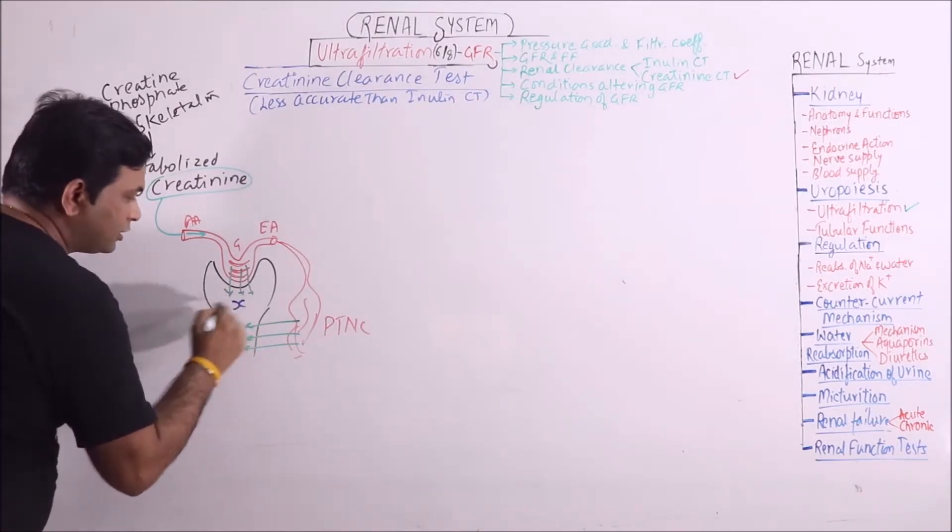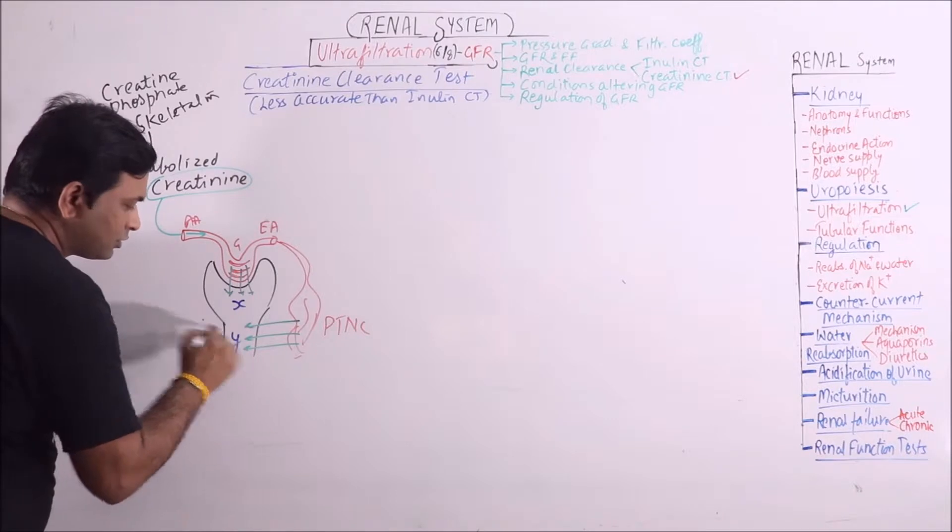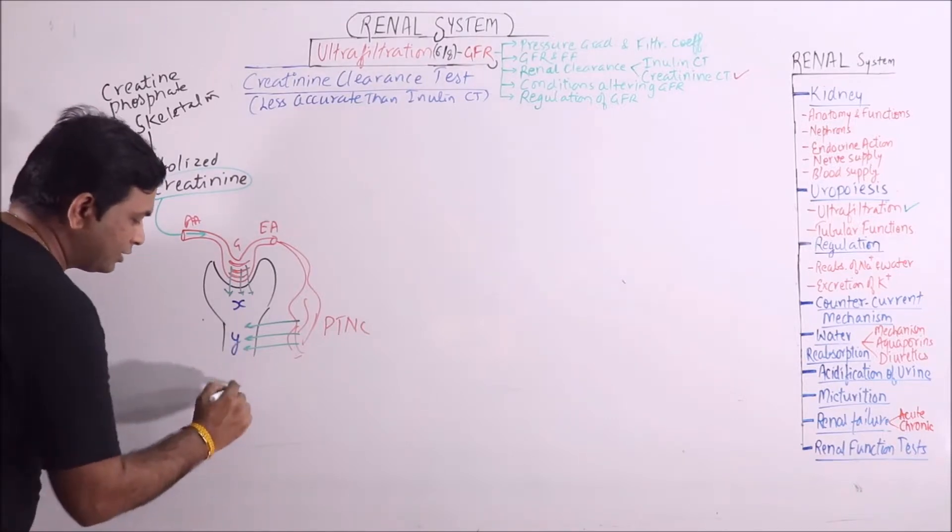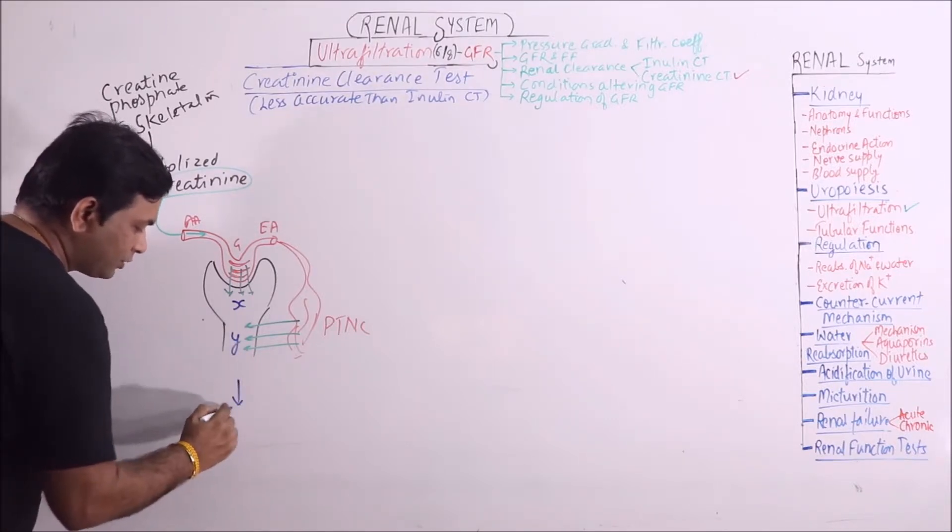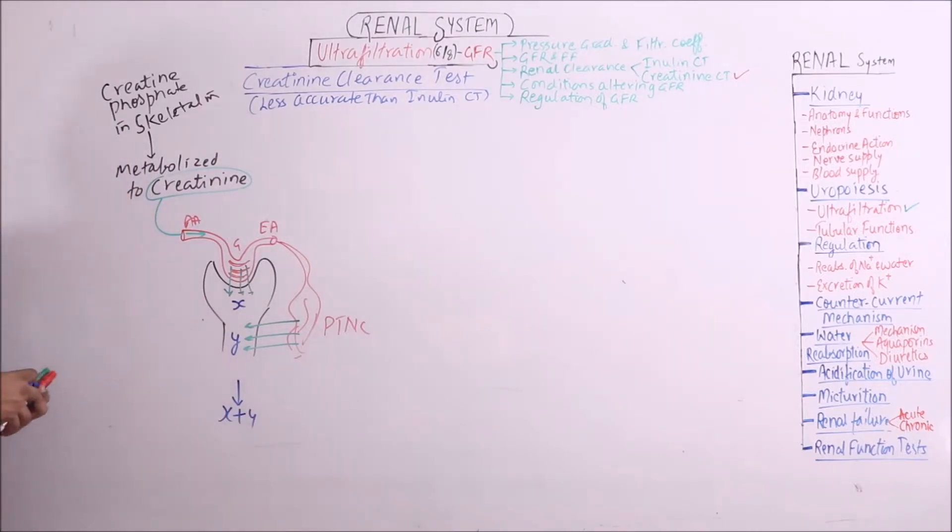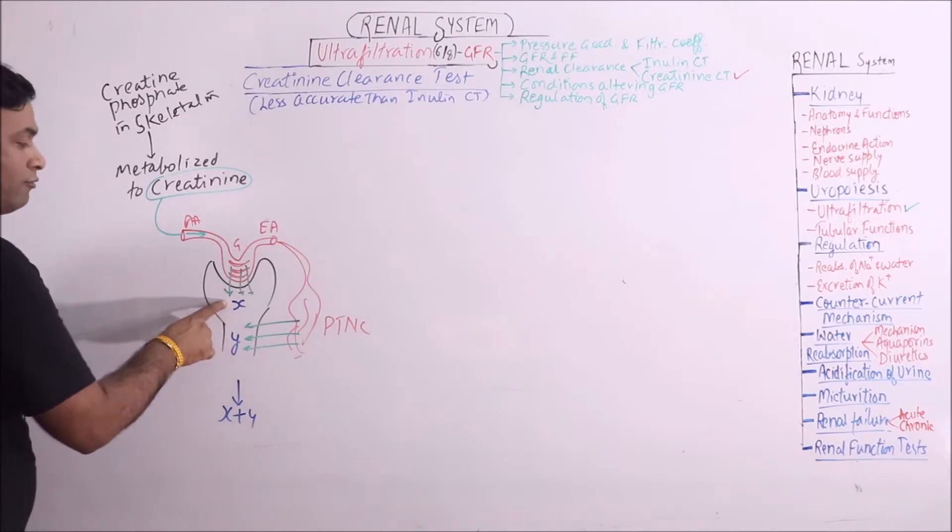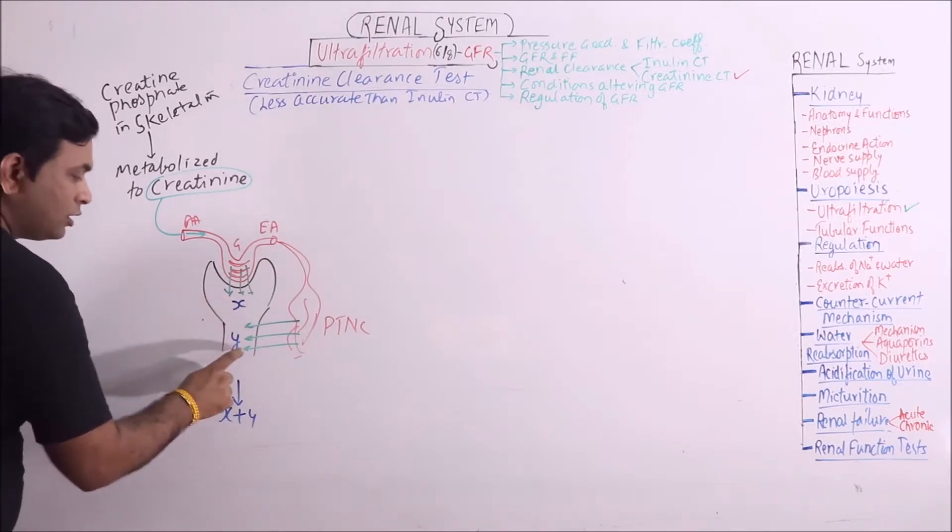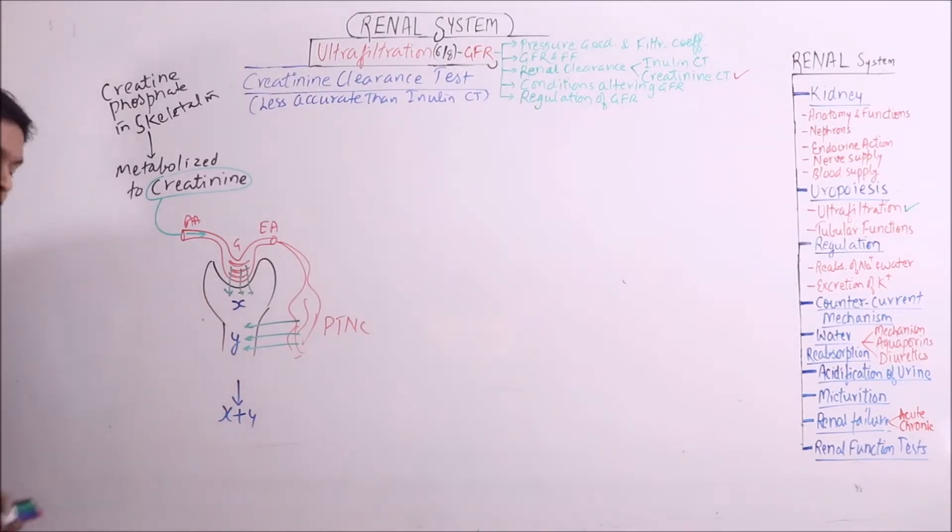Now if this filtered value is x, this secreted value is y, then final excretion is x plus y, not the x. So the clearance actually exceeds the value of filtered value because of this secreted part.